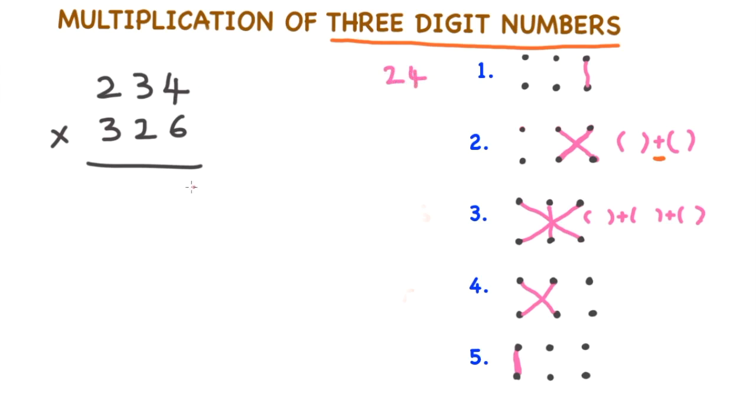Step 2: 6 times 3 is 18, plus 2 times 4 is 8. 18 plus 8 is 26, 26 plus 2 is 28. 2 is carry over.